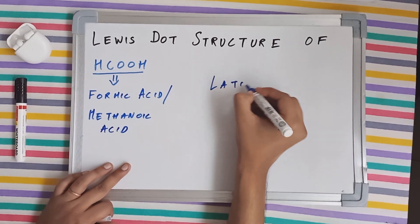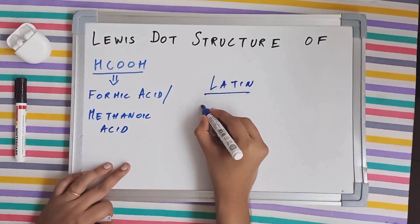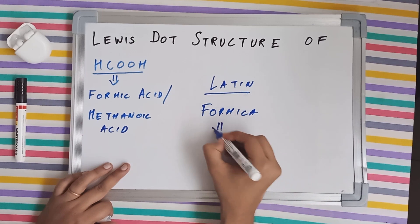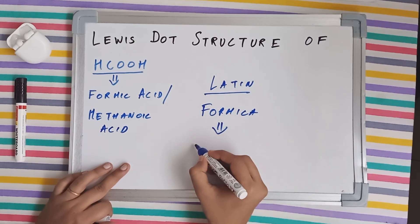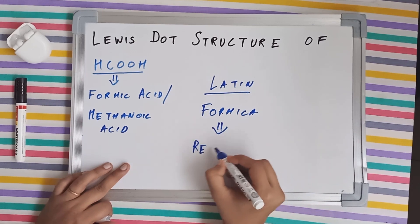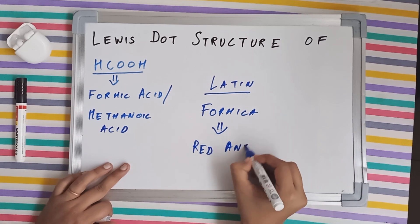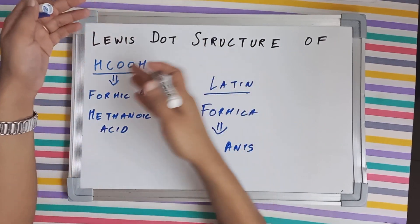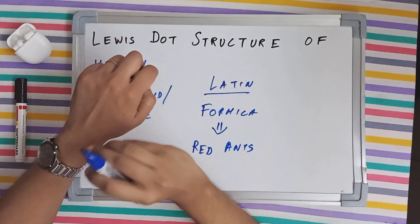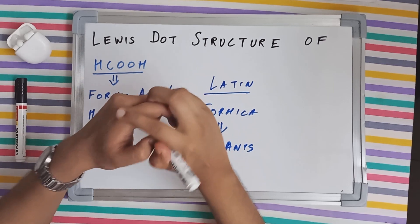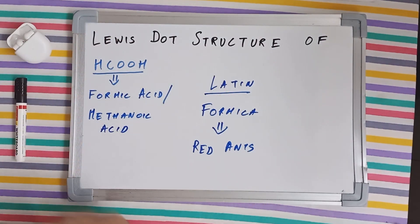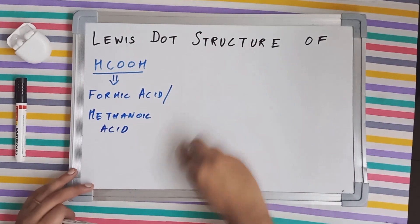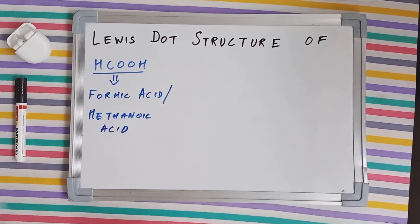The name 'formic' has come from the Latin word 'formica.' Formica is the Latin word used for red ants. Whenever a red ant bites you, it releases formic acid — this particular molecule — inside your skin, inside your dermis. So this molecule is termed formic acid.